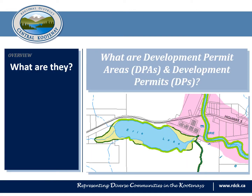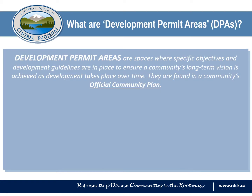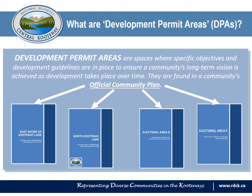So what exactly are DPAs and development permits? Development permit areas are spaces where specific objectives and development guidelines are in place to ensure a community's long-term vision is achieved as development takes place over time. They are found in a community's official community plan, which is a document that describes the long-term vision of a community and states the objectives and policies used to guide decision making in that area. What kinds of development permit areas are in a community depends on what the long-term vision is, and it varies from community to community.